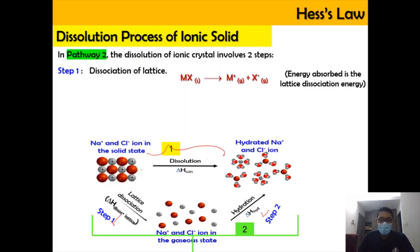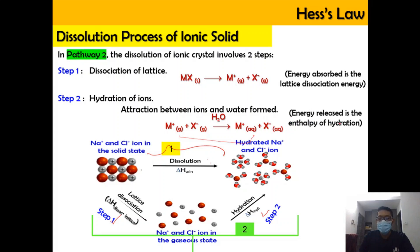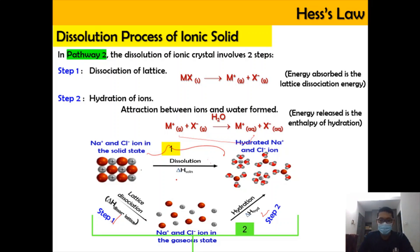That is step 1. In step 2, once the gaseous ions have been formed, they are hydrated in water so that the gaseous state is converted into the aqueous state for each species. This process involves energy release because the species go from the gaseous state back into the aqueous state, where the ions are brought closer together. Regardless of the pathway taken, pathway 1 and pathway 2 will still give the same result.